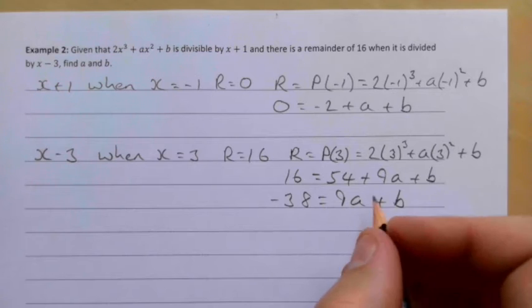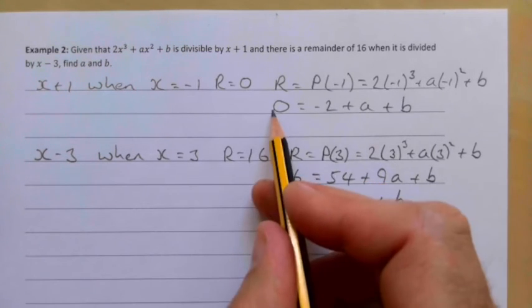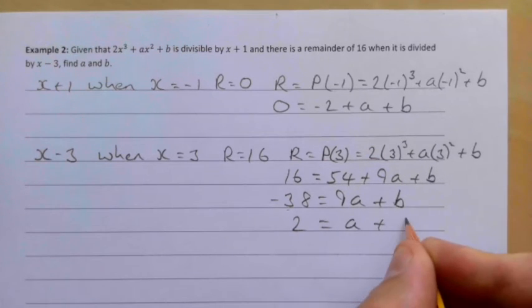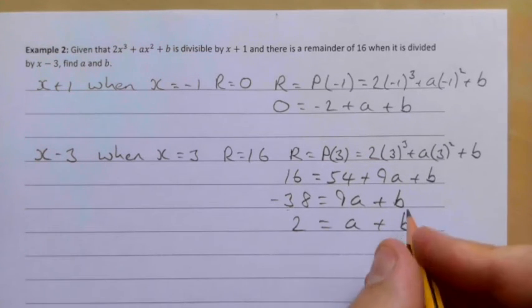Our other equation from earlier: taking -2 to the other side gives us 2 = a + b. Now we have two equations with two unknowns.